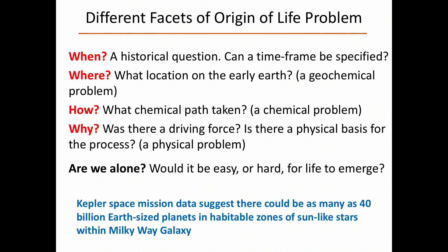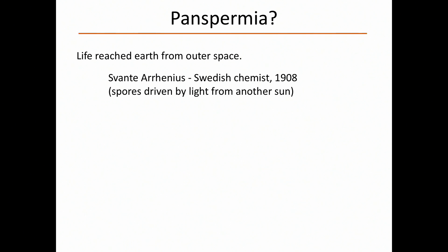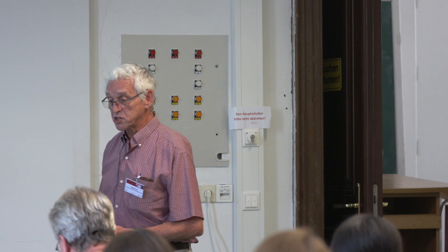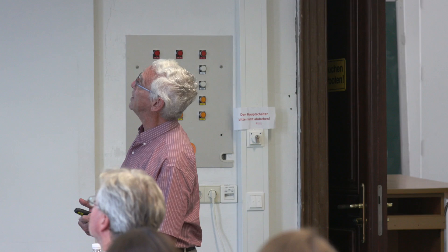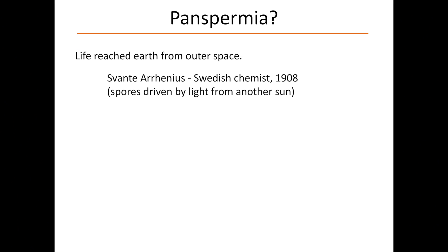Panspermia — one has to mention that just to clear the decks, get it out of the way, and then get down to the serious stuff. Panspermia is the idea that life arrived from outer space somehow. It was first suggested by Swedish chemist Arrhenius at the beginning of the 20th century, with the idea that spores driven by light from another sun brought life to our planet. That's not really considered serious now.